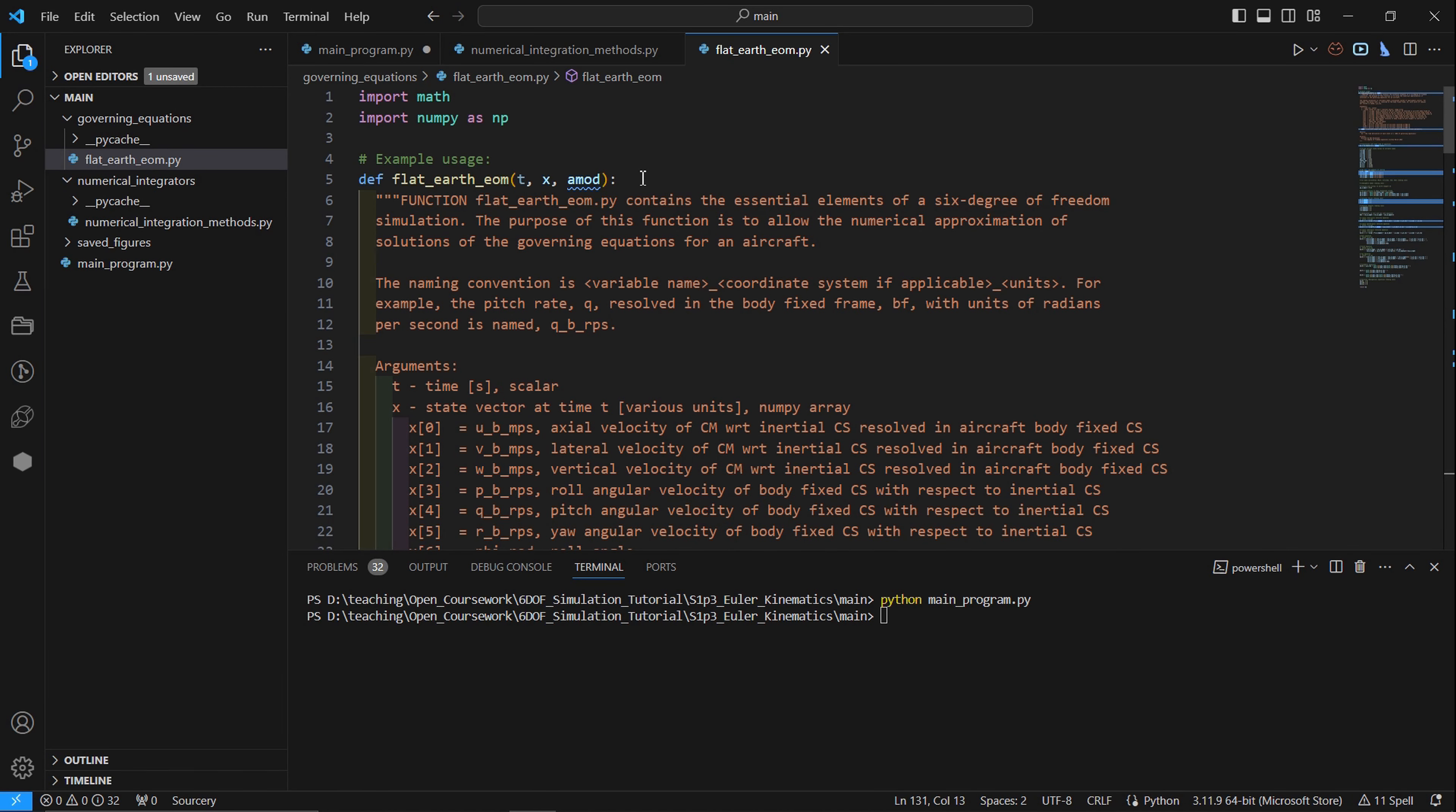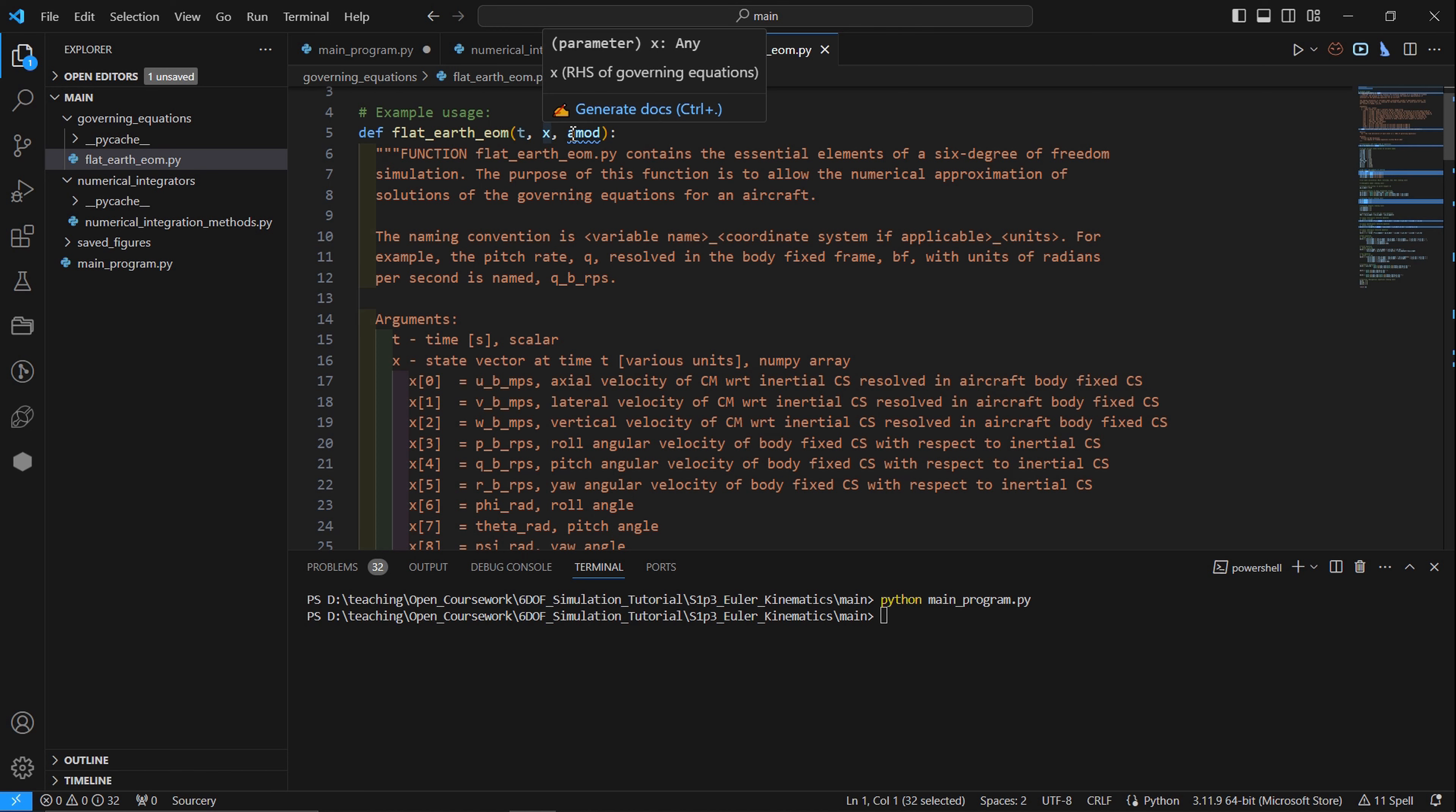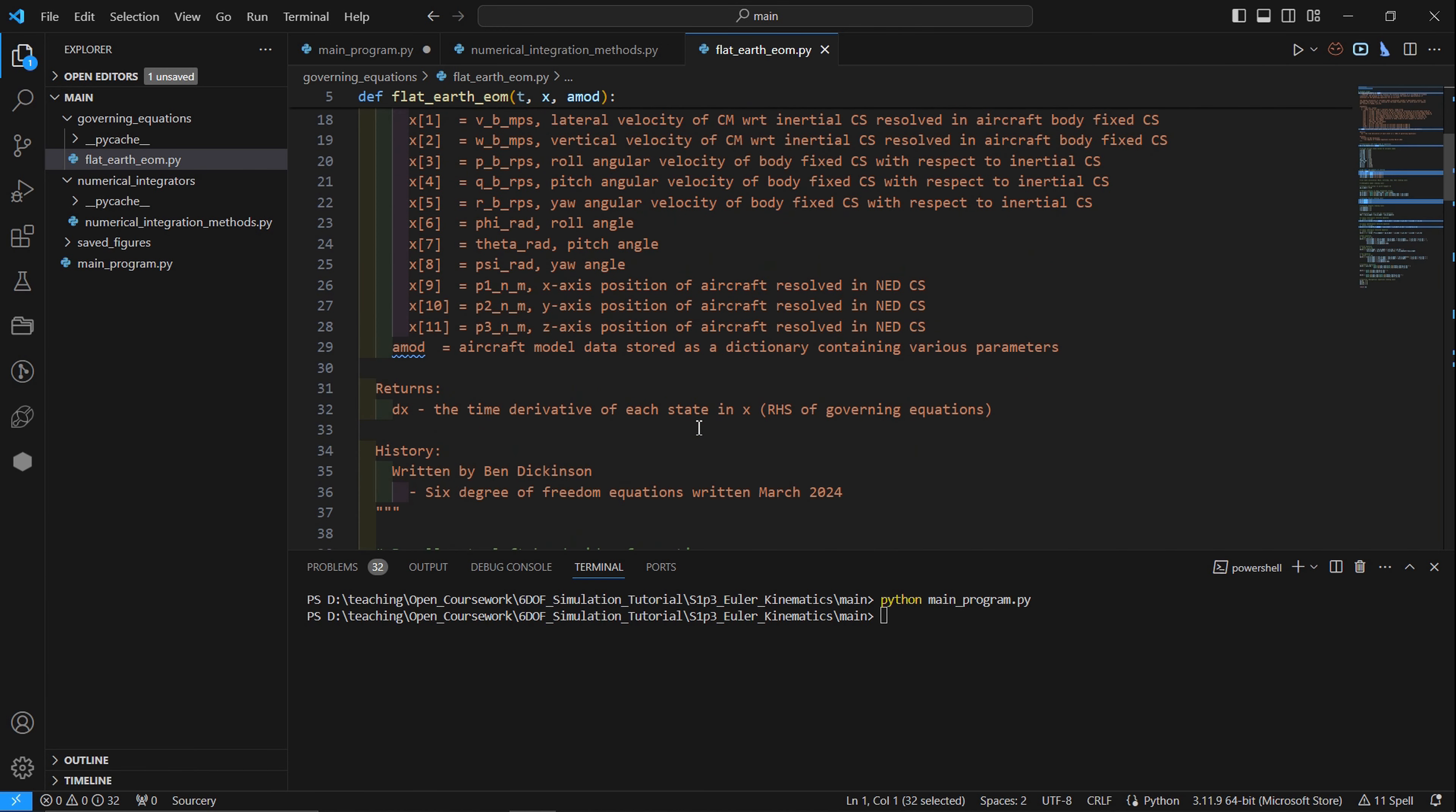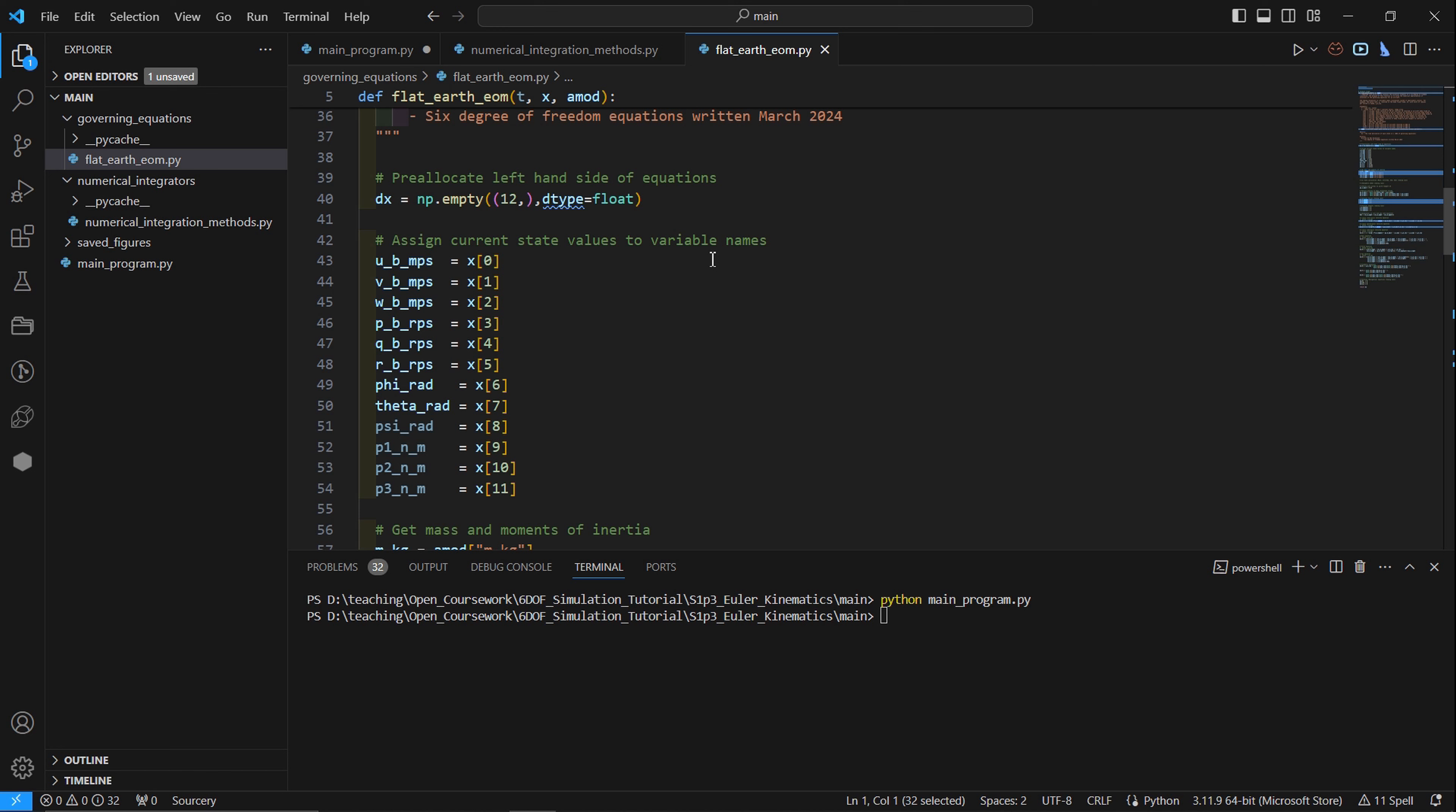And finally, the governing equations contained in the flat earth EOM script. Here we are in flat earth EOM. It's a function. We start with importing libraries. Our function has three input arguments now. Before we just had the instantaneous time and state. Now we are inputting the vehicle model. There's a description of what's going on. This script returns the time derivative of each state for numerical integration.